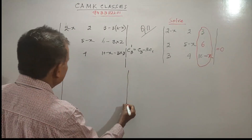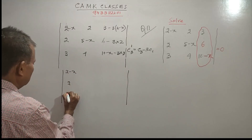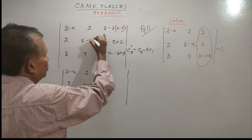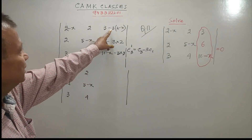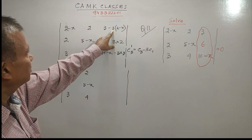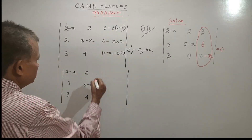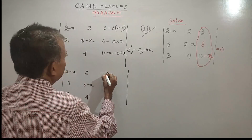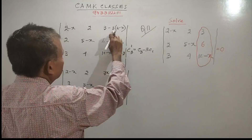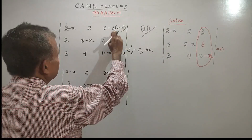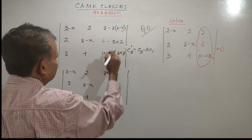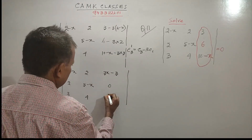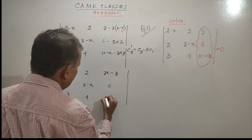After computation we see: the C3 entries become 2 minus x, then zero, then 1 minus x (since 3x minus 3 gives 3 common, that is x minus 1, and taking minus common also gives x minus 1). So the third column entries simplify to give us these values including 1 minus x.